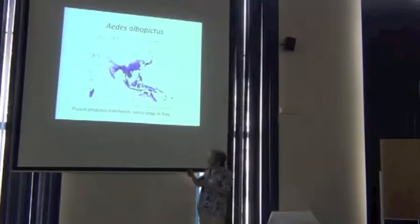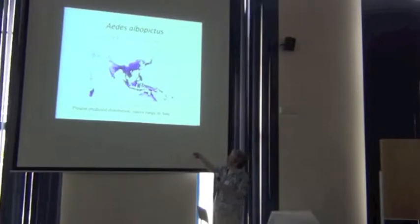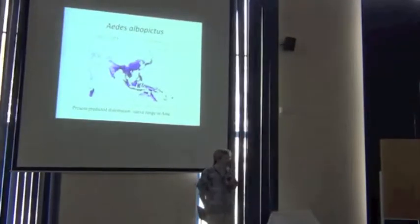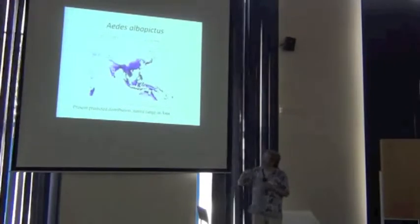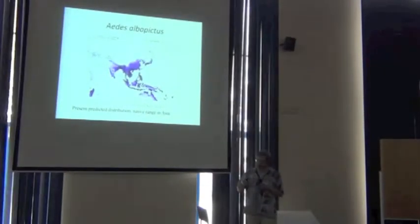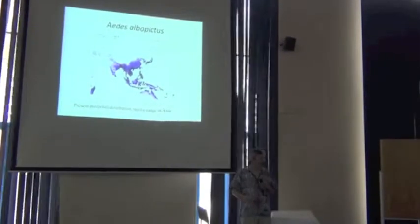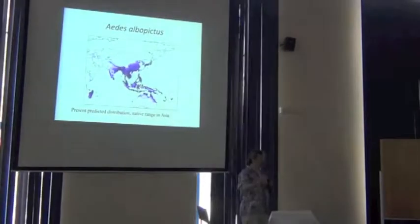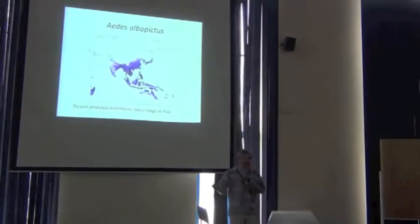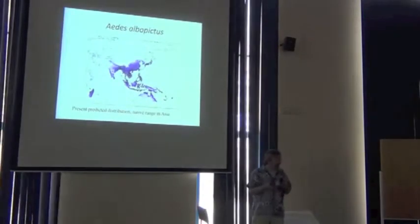So here is the native distribution of Aedes albopictus more or less in Southeast Asia, South Asia, and on the Sunda shelf. Hard to tell exactly what the native distribution of the species is, but each of those dots is a distributional point. And the purple shading is the result of a first niche volume. This is very old, very dated methodology, but it's a neat example.